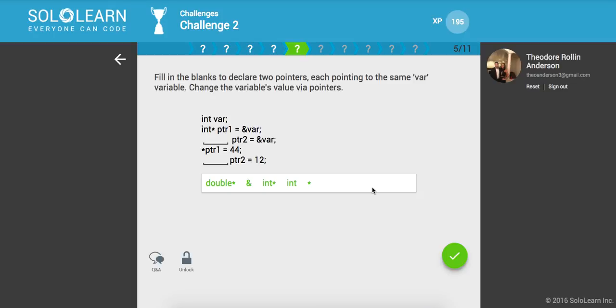Awesome. So fill in the blanks to declare two pointers, each pointing to the same var variable. Change the variable's value via pointers. So here we'll say, let's see. Each pointing to the same. Looks like, yeah, this will be int. So int pointer two. And int pointer two is going to be equal to 12. Let me think real quick. I think this should be, let's see. Let me try this out real quick.